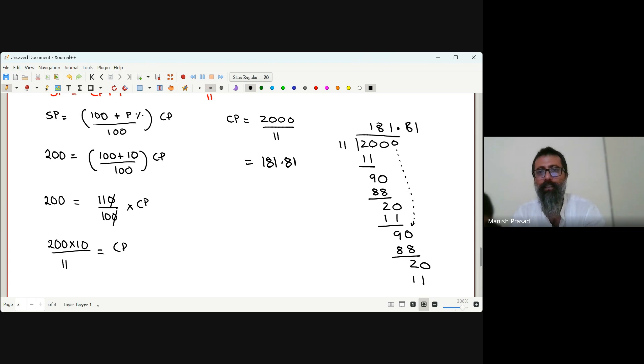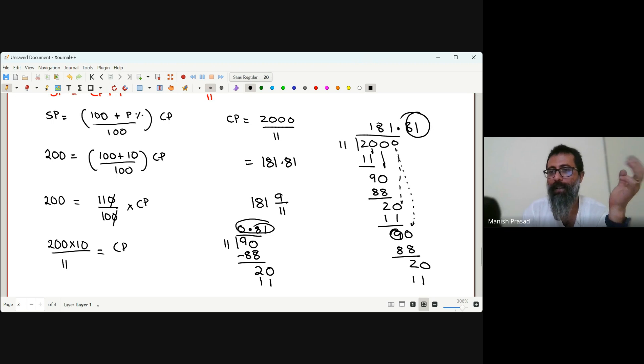See, this zero went, this zero went, this zero will come here. Now this nine does not go, so either I write my answer as 181 and 9 by 11. So basically I have to divide 9 by 11. You remember, if it cannot be divided we put a decimal and then a zero. 11 eights are 88, remainder 2, it does not go so we put another zero, 11 twos are 22. Decimal ke baad 8, 1, decimal ke baad 8, 1.